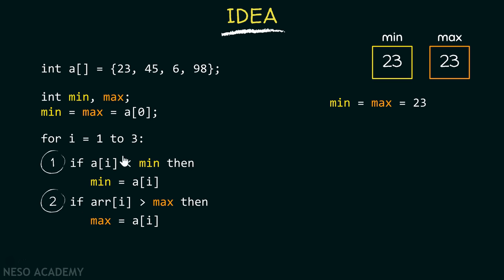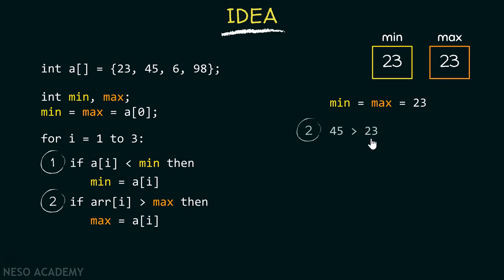Here, we are comparing the current element with the minimum element. If we find that this element is less than the minimum element, then this element is the new minimum. Otherwise, if this element is greater than the maximum element, then this element is the new maximum. We can see that 45 is greater than 23, so the new maximum element is 45, and we replace 23 with 45 in the max variable.